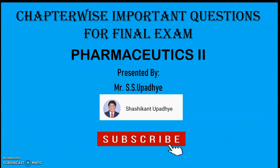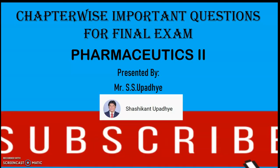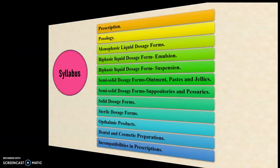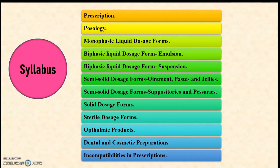Let us begin with today's presentation. First, let us see the syllabus of Pharmaceutics 2 for Diploma in Pharmacy second year. There are a total of 12 chapters. The first chapter is Prescription, followed by Posology, then Monophasic Liquid Dosage Forms, then Biphasic Liquid Dosage Forms in which emulsion is covered.